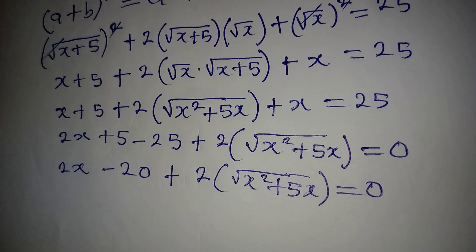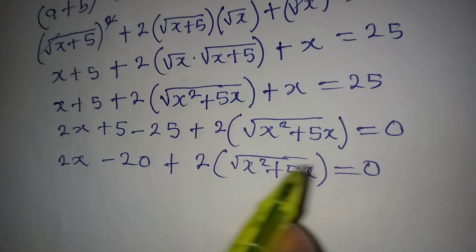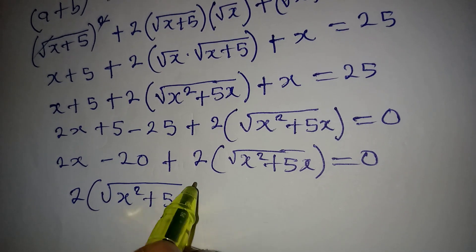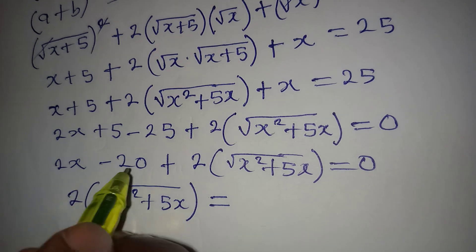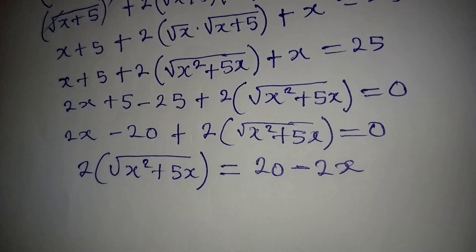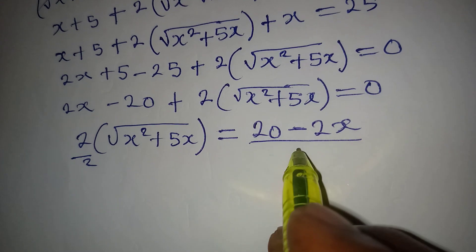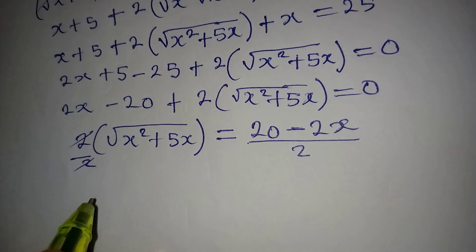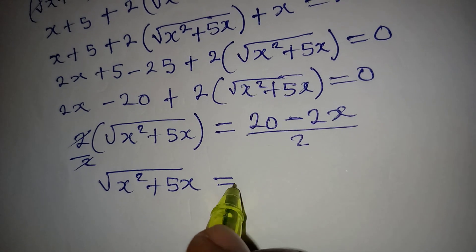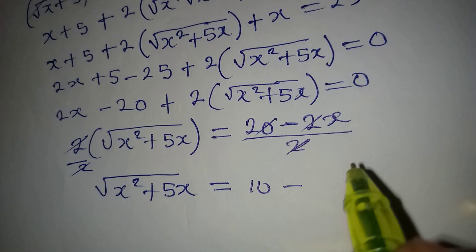Now I need to isolate the radical. Moving 2x minus 20 to the other side gives 2 times square root of (x² + 5x) equals 20 minus 2x. Dividing both sides by 2, we get square root of (x² + 5x) equals 10 minus x.